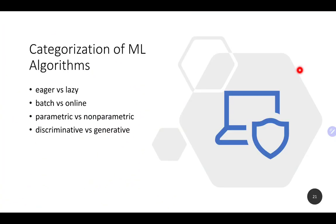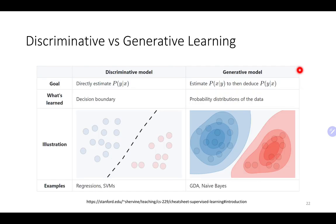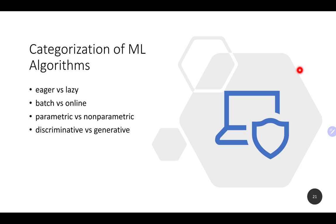How does learning work in machine learning? There are different categorizations: eager versus lazy, batch versus online, parametric versus non-parametric, and discriminative versus generative. In eager learning, models really learn from the data — they are fitted onto the training data, and when new data comes in, the model makes predictions. Pretty much most models fall into this category: logistic regression, linear regression, SVM, decision trees, neural networks. They all learn from the data.